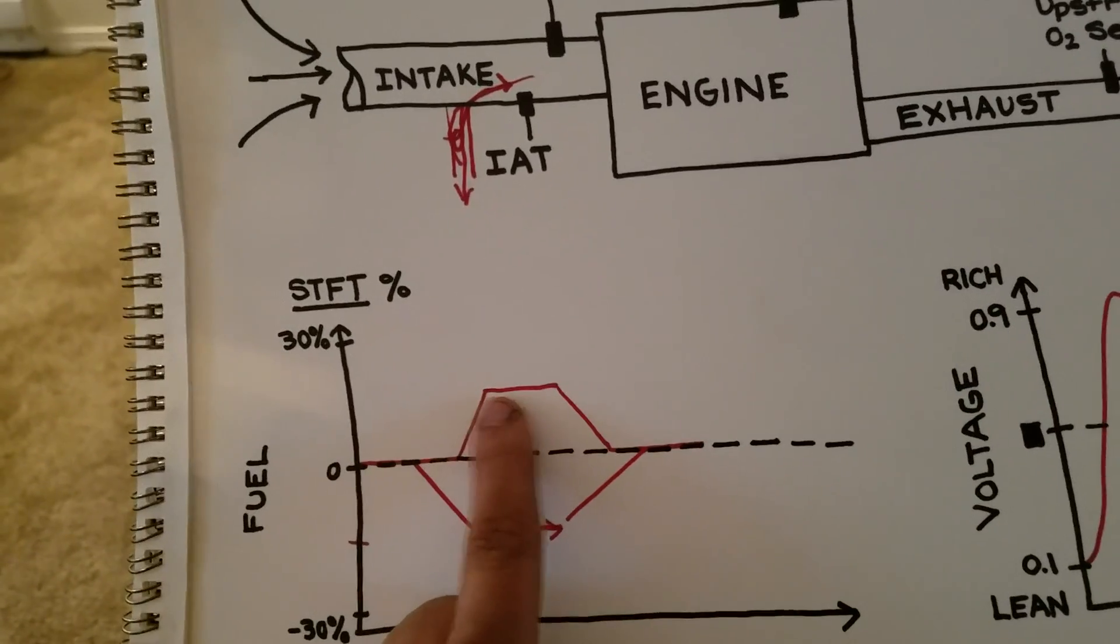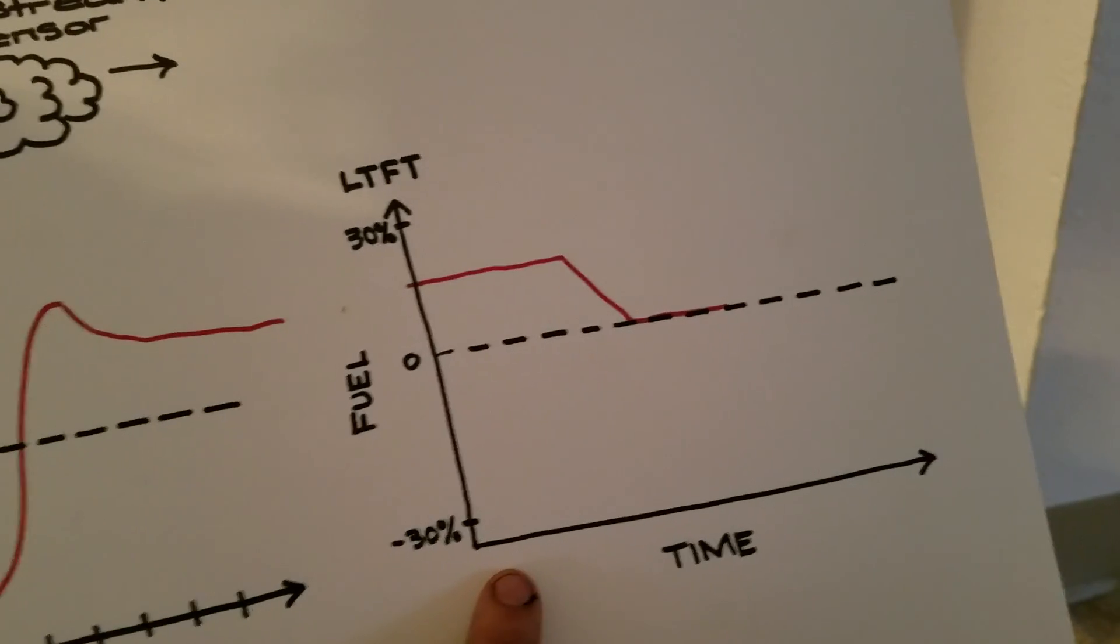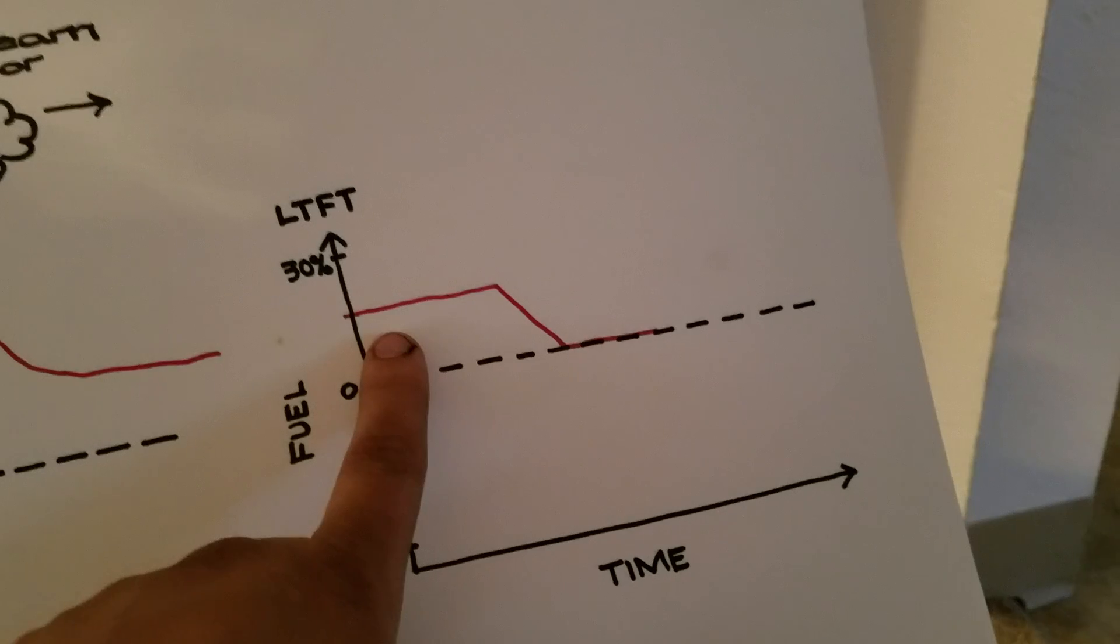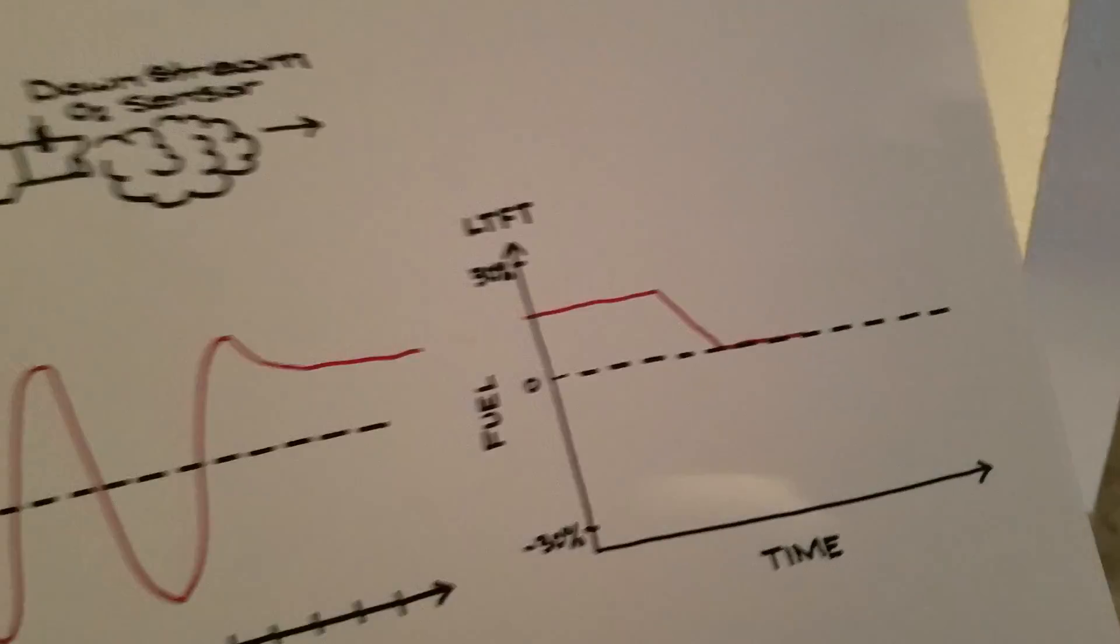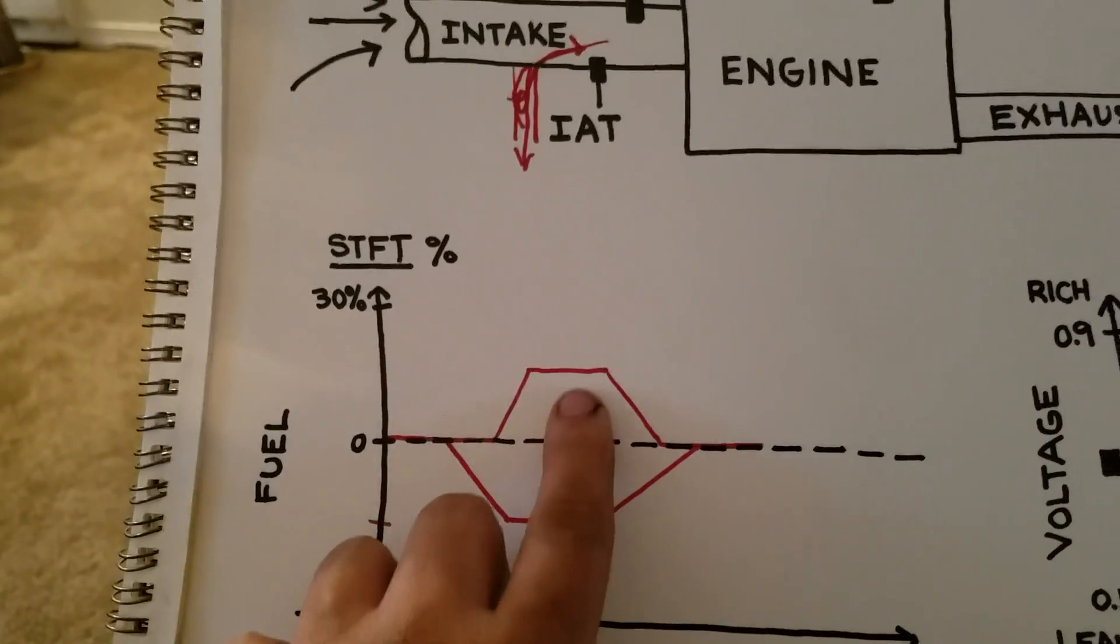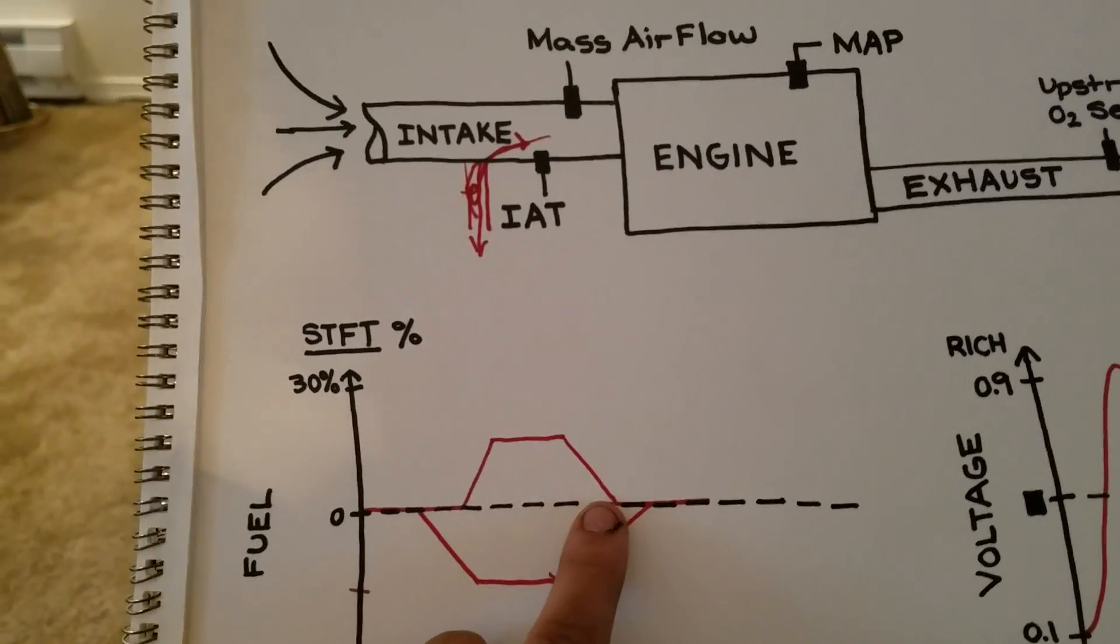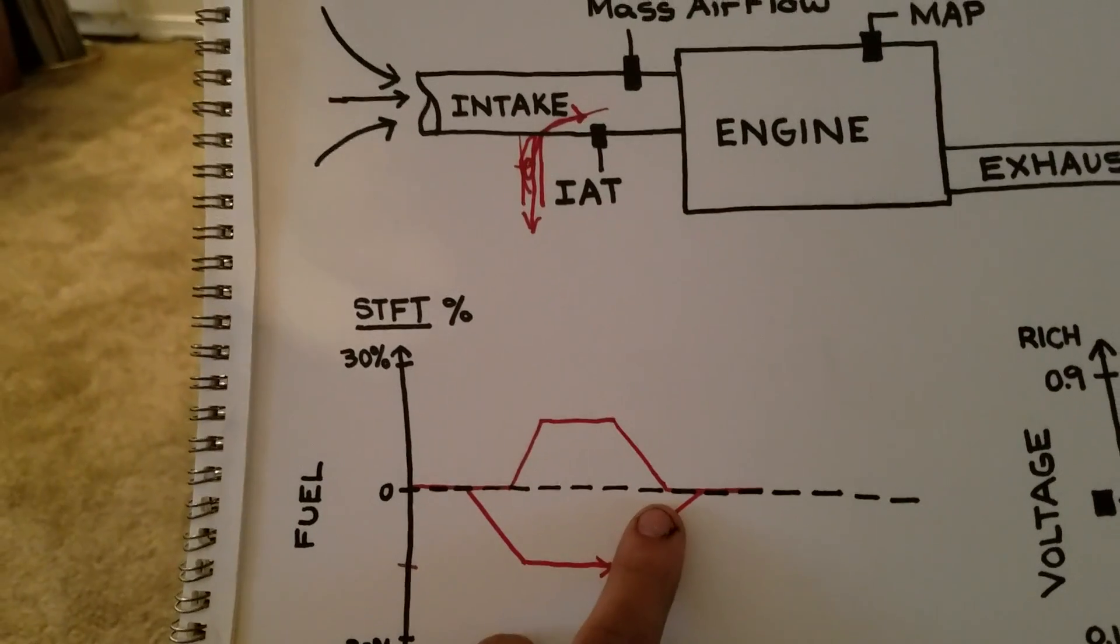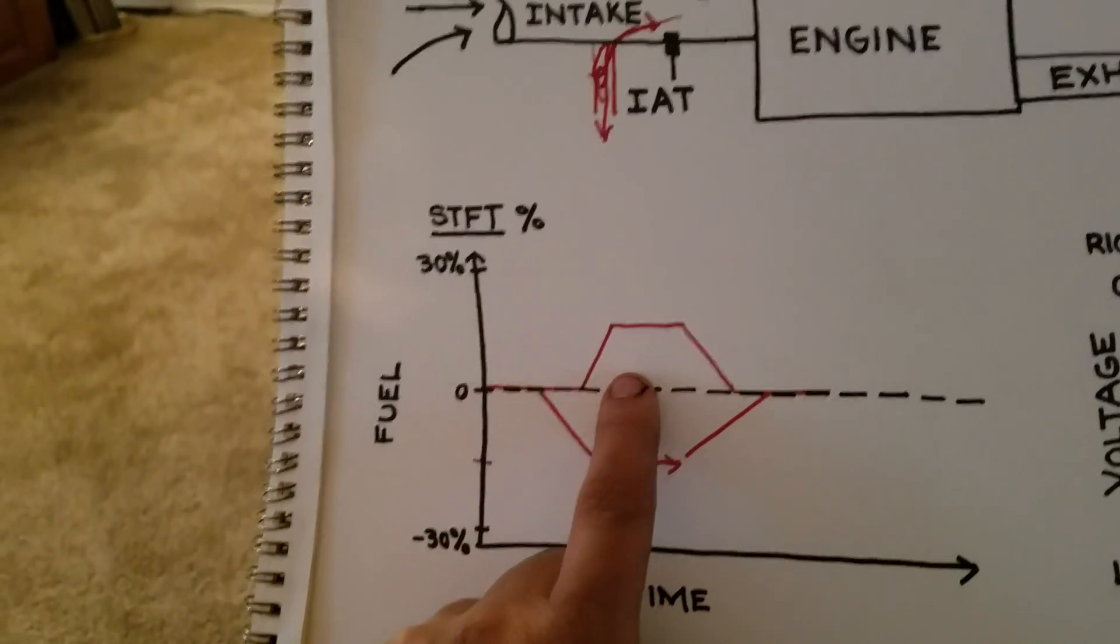If it maintains that baseline for a while, that's when it comes over to long-term fuel trim, which is what the computer remembers. So the next time you start up your car, it will automatically start at 15% added fuel. Now, let's say you find and correct that vacuum leak. Well, once you find it and correct it, it's going to be reflected in the exhaust again and it will now be too rich. So the computer will once again correct it by removing fuel until it reaches its happy value. See where I'm going with this? The computer is smart. It likes its perfect ratio.